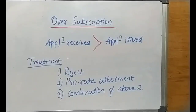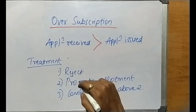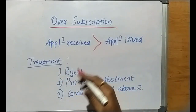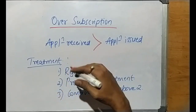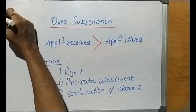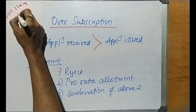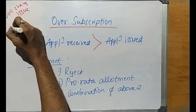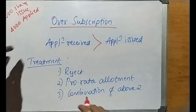Hello everyone, welcome back. In the last session we tried to understand the concept of under-subscription, which is a case where a company receives fewer applications than the shares it issues to the public. For example, if the company issues 5,000 shares but receives applications for only 4,000 shares, that is under-subscription.